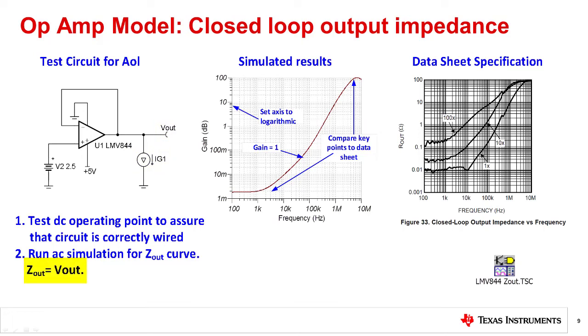The output is connected to a current generator and a voltage measurement probe. Closed loop output impedance is equal to the output voltage in this simulation. That is, Zout in dB equals Vout in dB. By changing the y-axis to logarithmic, we get Zout in ohms. In other words, Zout in ohms equals Vout in logarithmic. Notice that the simulation results closely match the datasheet curve for Unity game.